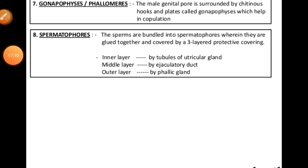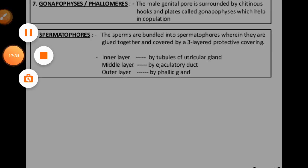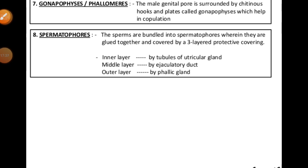The spermatophores have different layers: the inner layer consists of tubules of circular utricular glands; the middle layer is the ejaculatory duct; and the outer layer is the phallic gland. These all help in secreting the reproductive cells from the male.